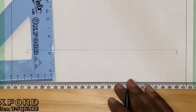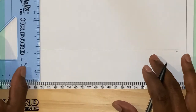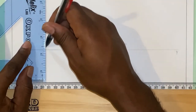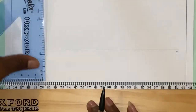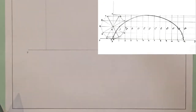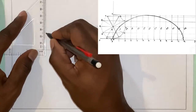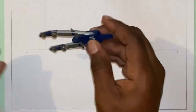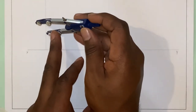First I'm going to use my set square to draw a vertical line. On this vertical line I'm going to mark off 25 millimeters, which is half of my diameter — that is the radius of my circle. Next, I'm going to open my compass to that 25 millimeters.